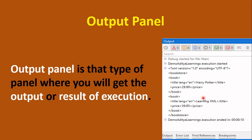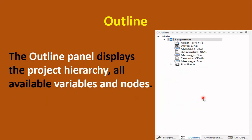So what is the outline? The outline displays the project hierarchy of all the available variables, nodes, and activities that are present in your workflow. It shows the sequence of activities in the workflow — here in the main file we can see a sequence.